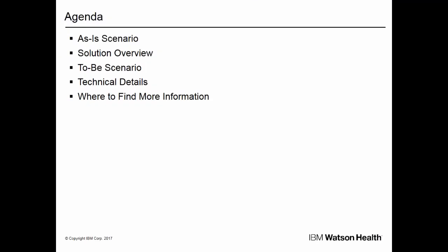For each enhancement we discuss in this presentation, we'll start by discussing the as-is scenario — the state of the software prior to version 702. We'll then move on to an overview of the solution or enhancement, including descriptions of the to-be scenario, the changes in version 702. We'll then present some of the technical details of the changes, and we'll finish by telling you where you can find more information about the updates.